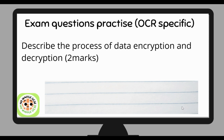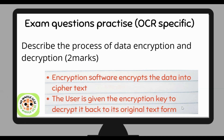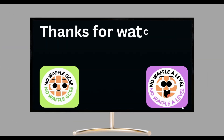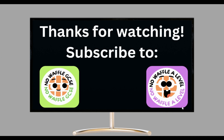Exam question: describe the process of data encryption and decryption — this is two marks. Encryption software encrypts the data into ciphertext. The user is then given the encryption key to decrypt it back to its original text form to get the original message. Thank you so much for watching — subscribe to Knowful GCSE and Knowful A-Level.